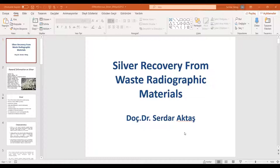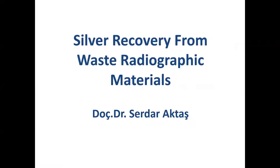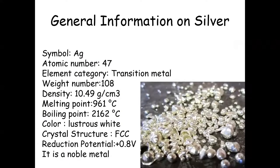Today I'm going to talk about silver recovery from waste radiographic materials. General information on silver: the symbol is Ag, it comes from Argentum. The atomic number is 47. This is a transition metal. The atomic weight is about 108 grams per mole. Density is 10.49 grams per cubic centimeter. Melting point is 961 degrees Celsius. Boiling point is 1620 degrees Celsius. Color is lustrous white — very, very bright. The crystal structure is face-centered cubic. It is very soft and malleable. The reduction potential is almost 0.8 volts.